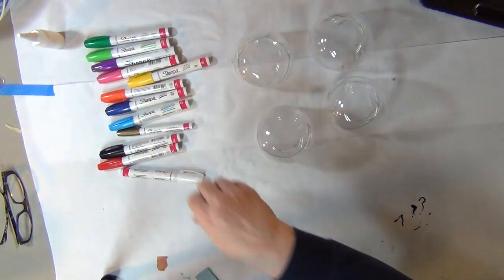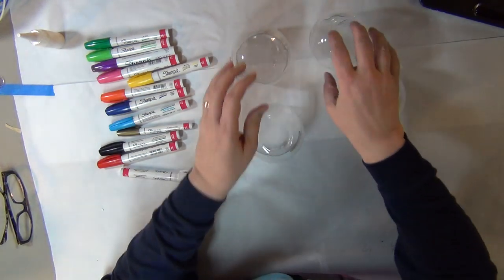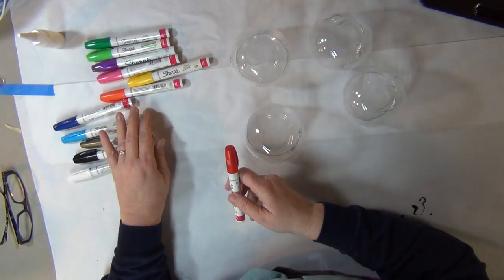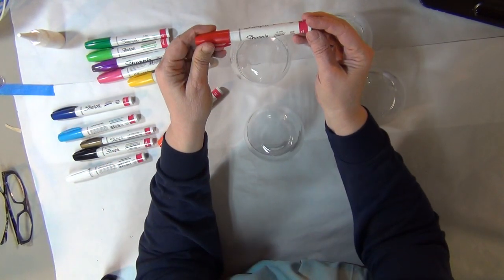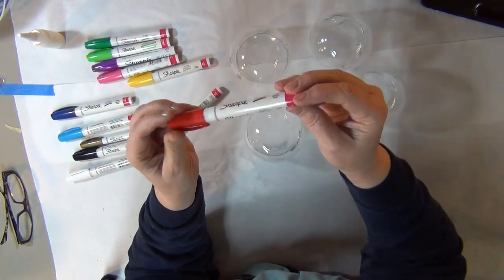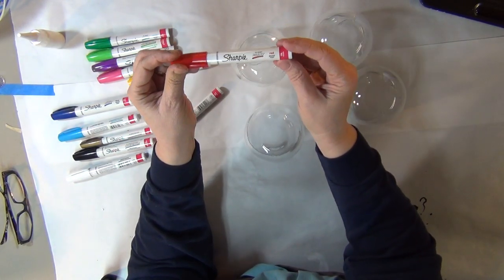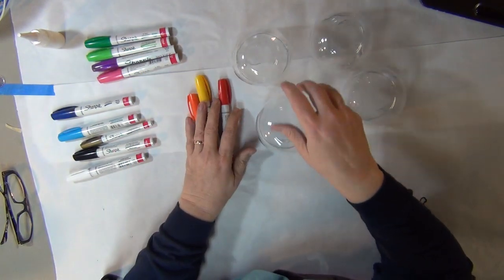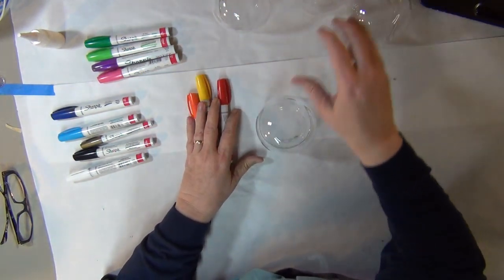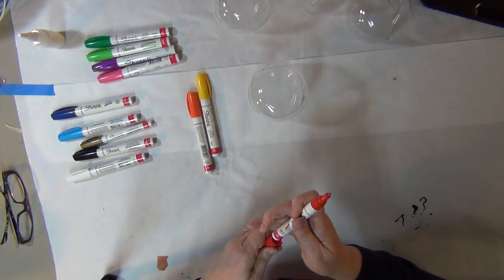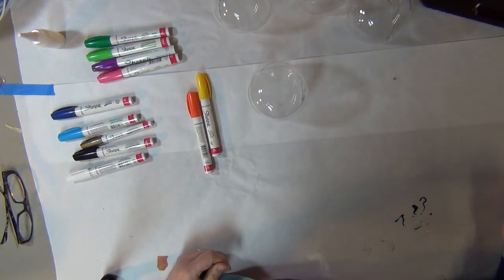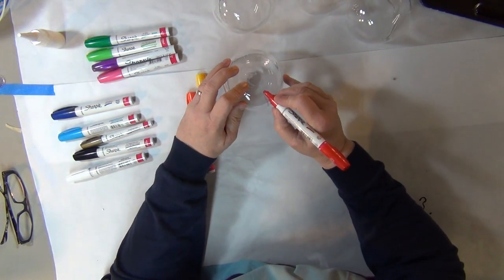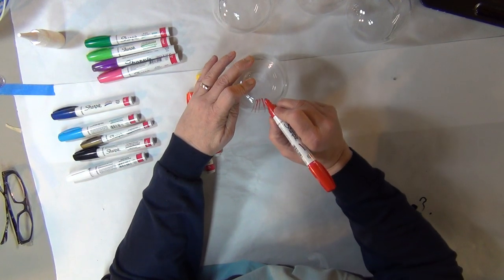I made these for my mom and my aunt at Christmas, and they loved them. So I'll show you what we're going to do. You get Sharpie oil-based paint, and you get the medium point, and then you just choose the colors you want on the glass. I saw this on a Pinterest post and I thought I would try it. It's really easy and really fun.